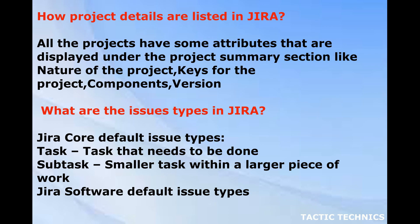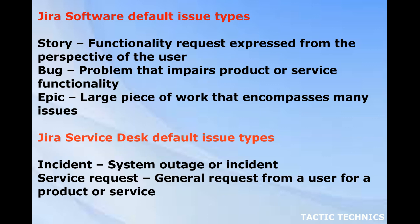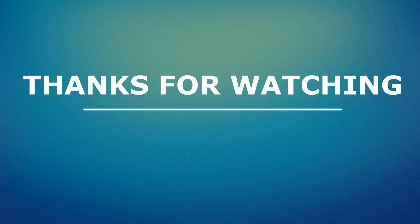What are the issue types in Jira? Jira Core default issue types: Task — a task that needs to be done; Subtask — a smaller task within a larger piece of work. Jira Software default issue types: Story — a functionality request expressed from the perspective of the user; Bug — a problem that impairs product or service functionality; Epic — a large piece of work that encompasses many issues. Jira Service Desk default issue types: Incident — a system outage or incident; Service Request — a general request from a user for a product or service; Service Desk Referral.